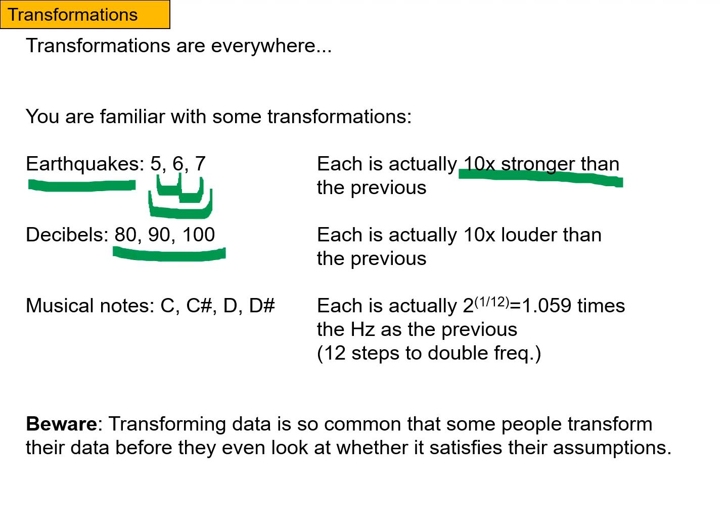Decibels work the same way. Every 10 decibels is 10 times louder than the previous. So 100 decibels is 100 times louder than 80, not just a quarter larger.